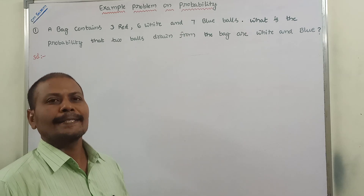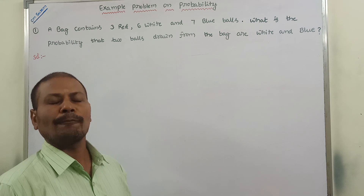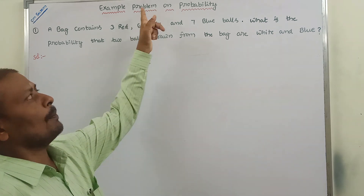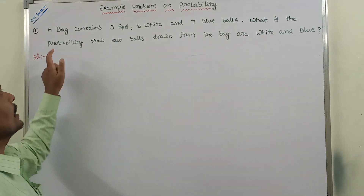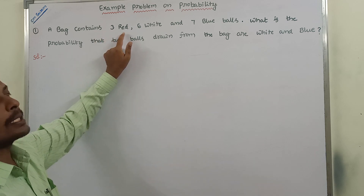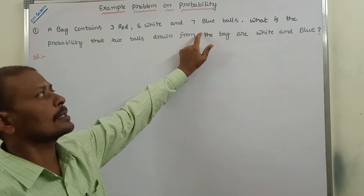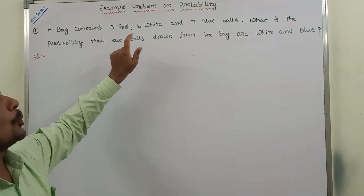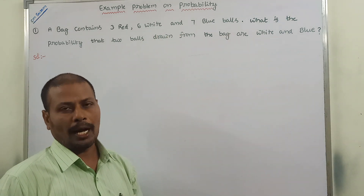Hi friends, welcome back to our YouTube channel. Today we have to discuss about one example problem on probability. The given problem is: a bag contains three red balls, six white balls and seven blue balls. What is the probability that two balls drawn from the bag are white and blue?